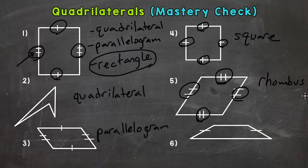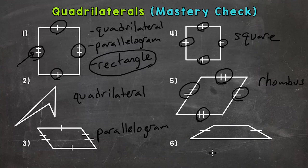And then lastly, number six. We have two congruent sides — the left and the right. Checking parallel: the left and the right are not parallel, just the top and the bottom are. So exactly one pair of parallel sides — trapezoid.